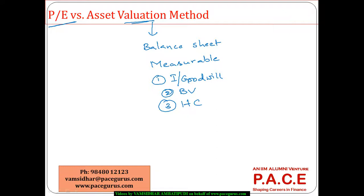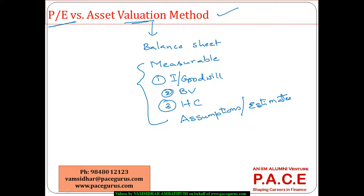These balance sheets are typically prepared based on various assumptions and estimates taken by the management, which could differ significantly from company to company. This means the value of the firm when using this asset valuation mechanism could be heavily dependent on those assumptions and estimates, and in many cases this could result in a value substantially lower compared to the price to earnings mechanism.